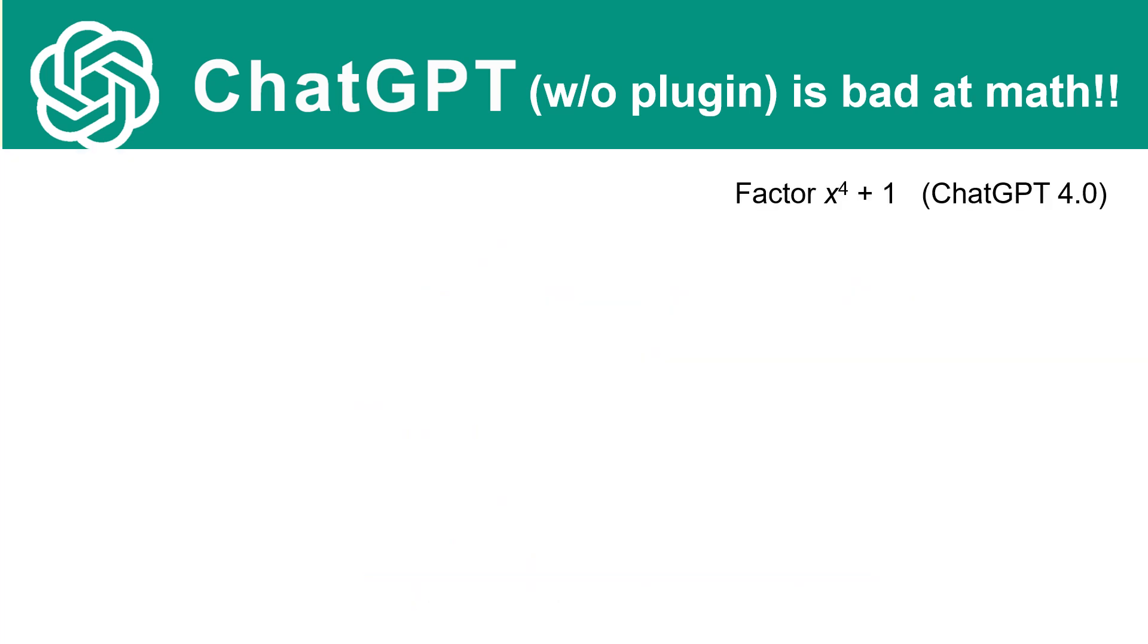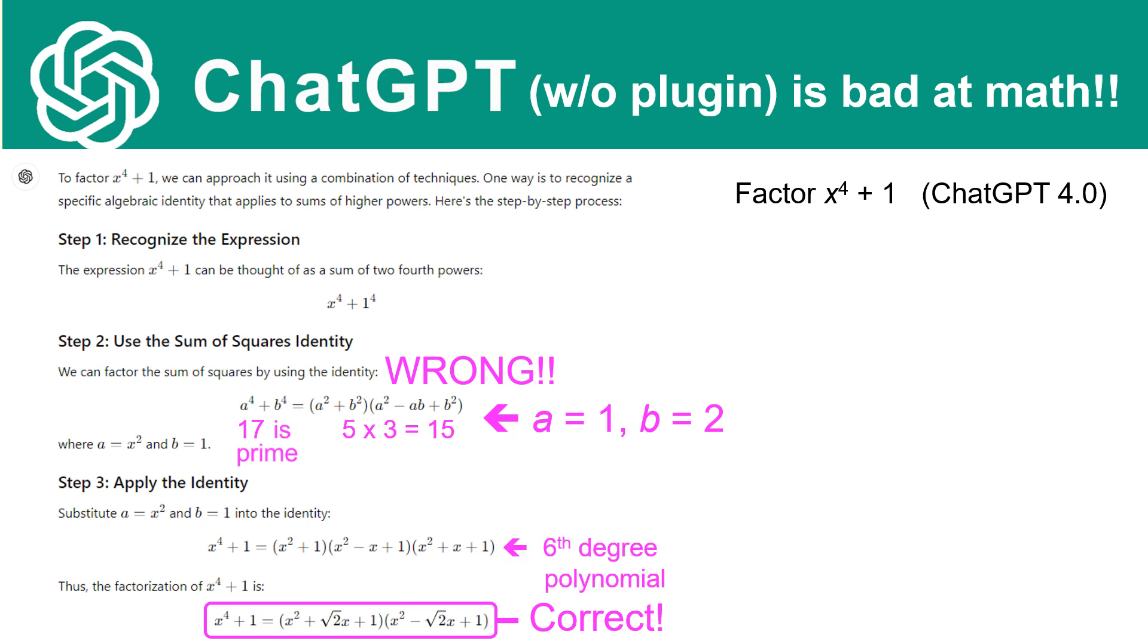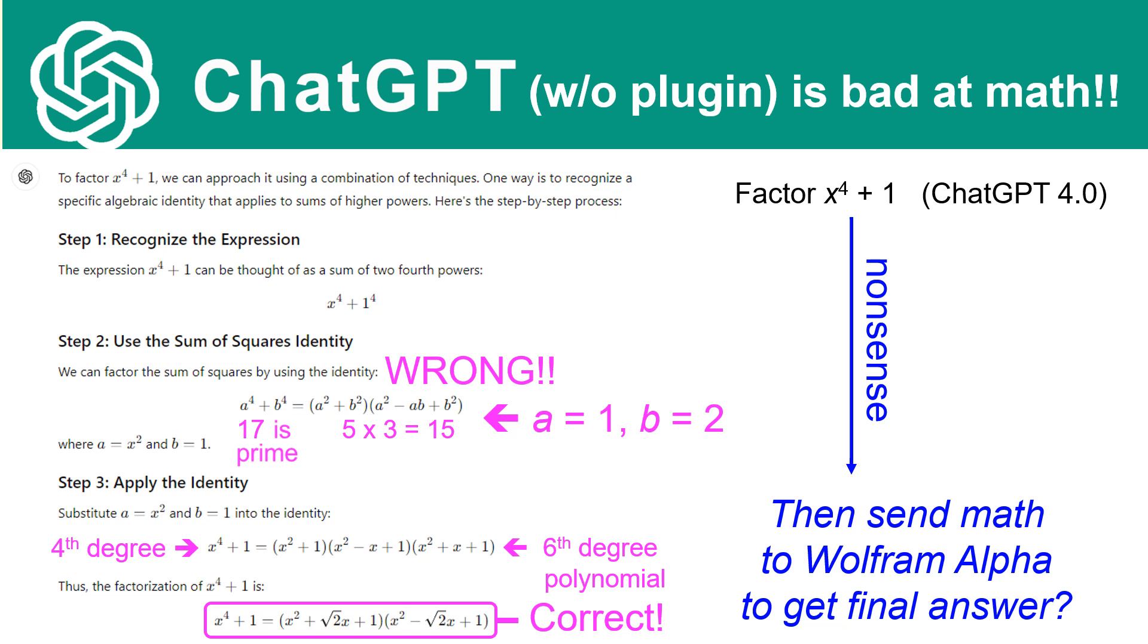Let's look at another one. Let's factor x⁴ + 1. Here is the result - notice that it gives us the correct output, but it has this sum of squares by using this identity which is completely wrong. For example, if a is 1 and b is 2, a⁴ + b⁴ is 17, which is prime, and the other side is 5 times 3, which is 15. And notice that it actually has in step 3 that a fourth degree polynomial is equal to a sixth degree polynomial. So it just gave us nonsense and then probably sent the math to Wolfram Alpha to give us the final answer. In other words, as my wife said, ChatGPT peeks at Wolfram Alpha's exam paper to get its final answer.